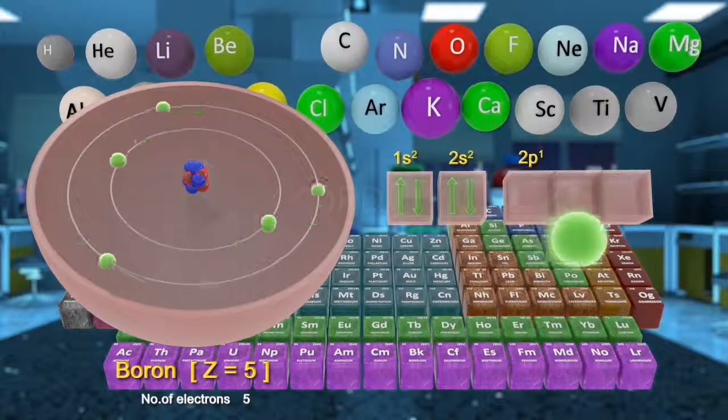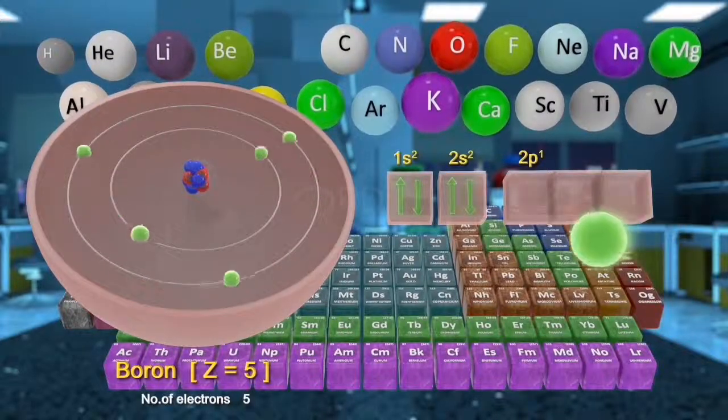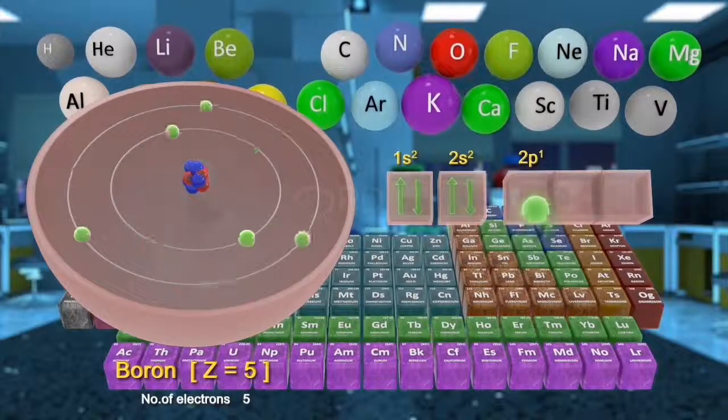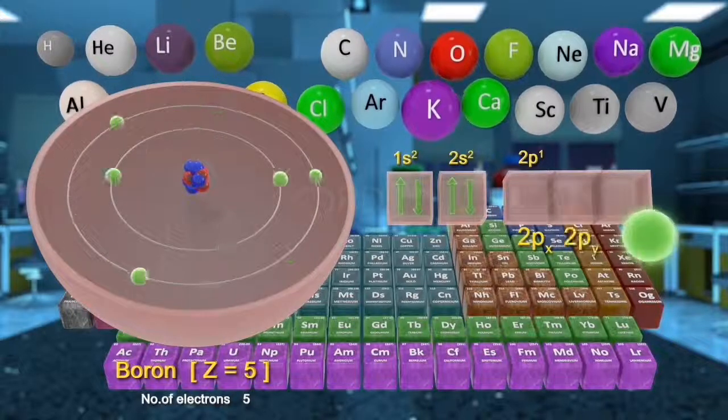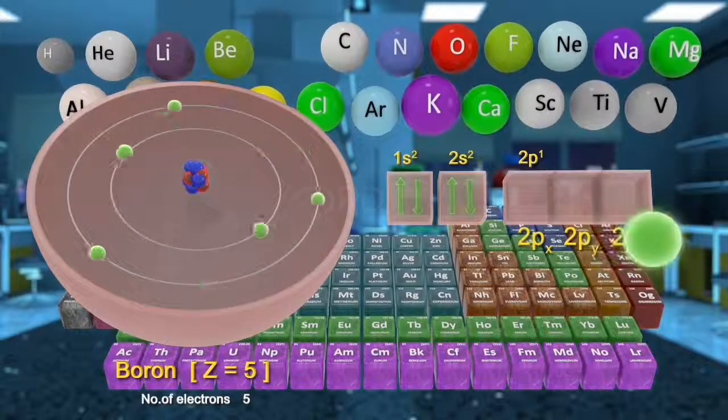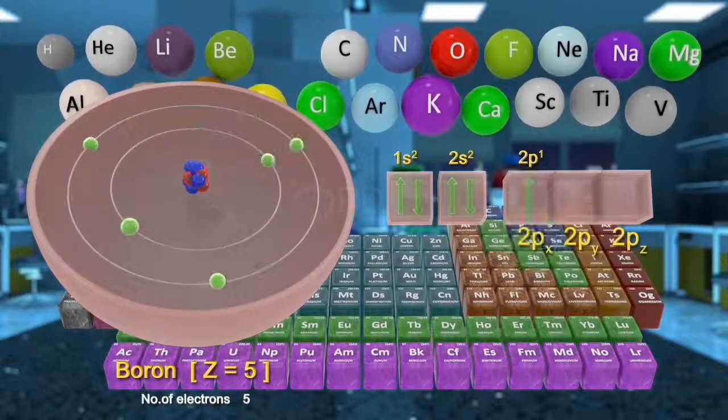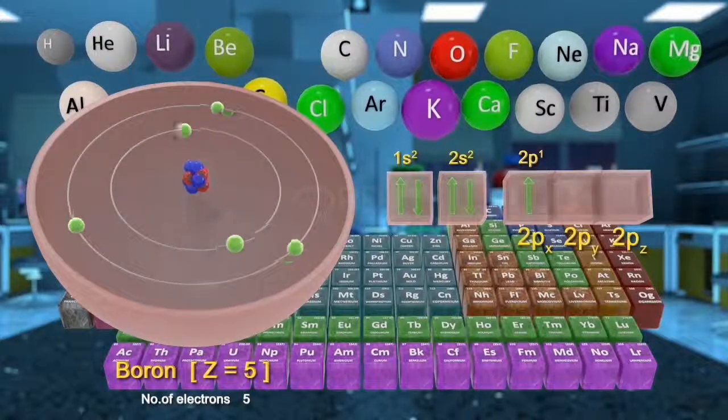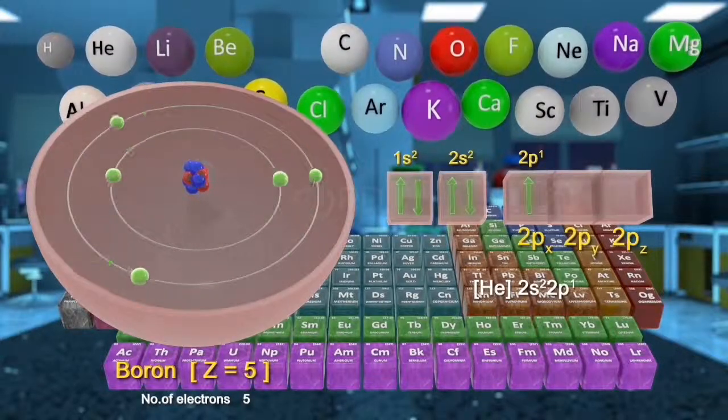The fifth electron can occupy any one of the two p-orbitals, that is, 2px or 2py or 2pz, as they have the same energies. However, conventionally, we fill them in the order 2px, 2py and 2pz.